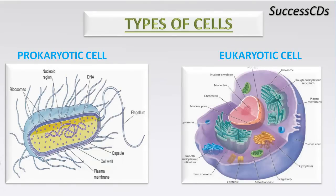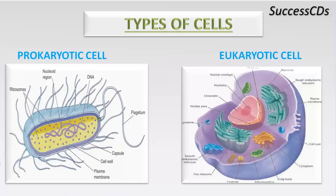The first type is the prokaryotic cell and the second is the eukaryotic cell. 'Pro' means before and 'karyotic' means nucleus. Prokaryotic cells do not have a well-defined nucleus or well-defined cell organelles, but eukaryotic cells have both a well-defined nucleus and well-defined cell organelles.